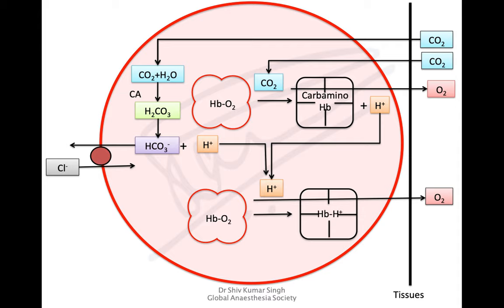At the tissue level, carbon dioxide is taken up because it is produced as part of metabolism, and oxygen is given out. This becomes possible because deoxygenated hemoglobin has higher affinity for carbon dioxide and hydrogen ions.